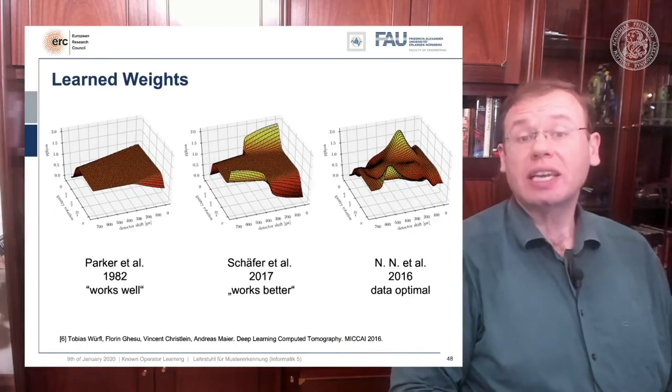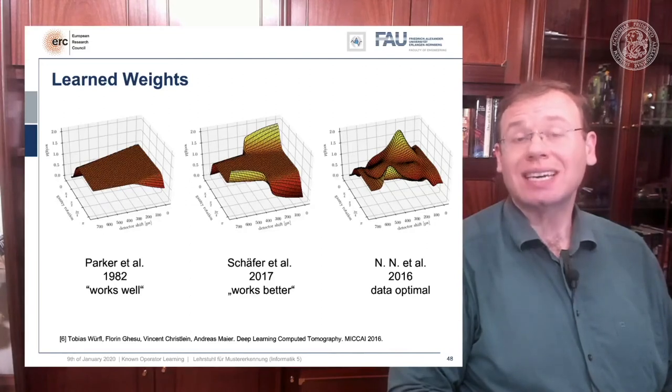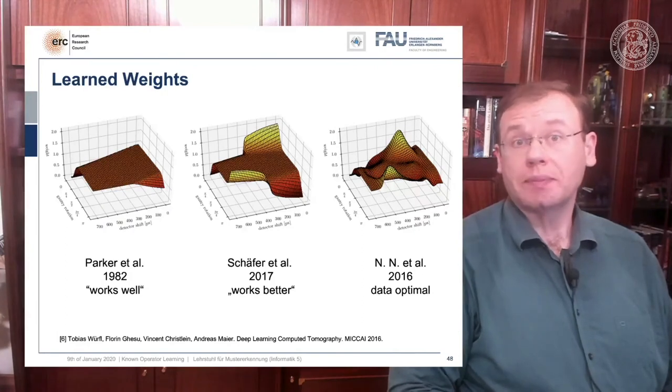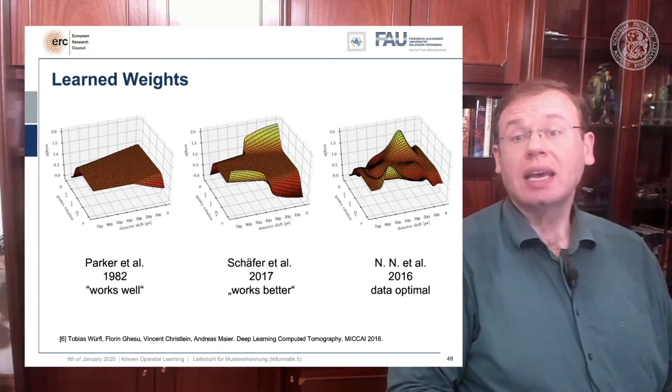This means we can read out the trained weights from our network and compare it to the state of the art. If you look here we initialized with the so-called Parker weights, which is the solution to a short scan, and the idea here is that opposing rays are assigned a weight such that the rays that measure exactly the same line integrals essentially sum up to one. This is shown on the left hand side. On the right hand side you find the solution that our neural network found in 2016. So this is the data optimal solution.